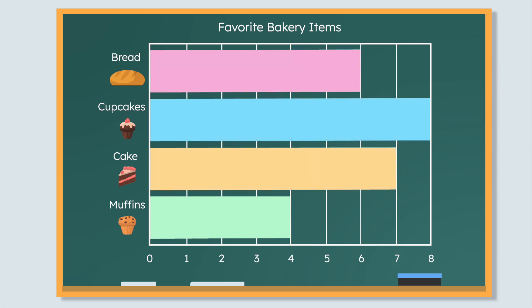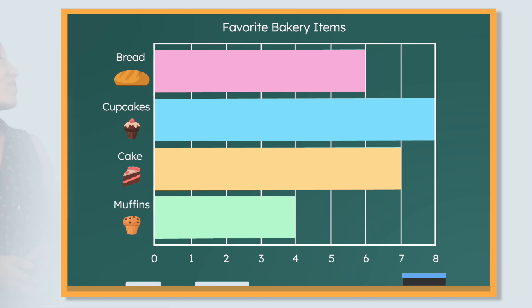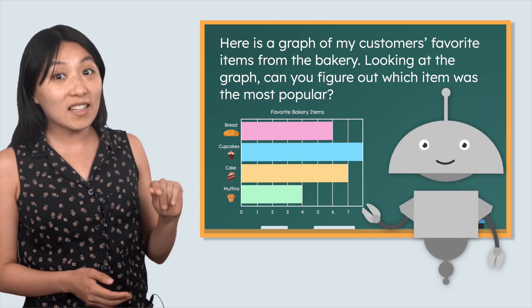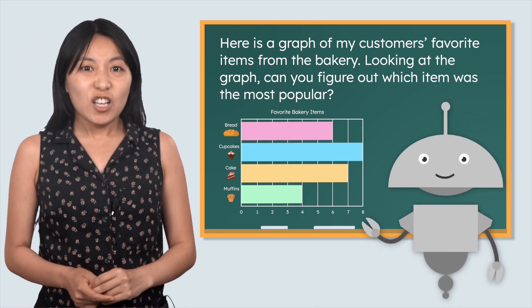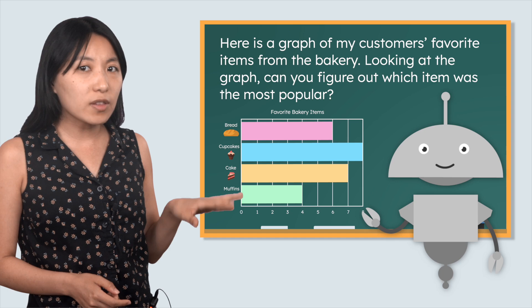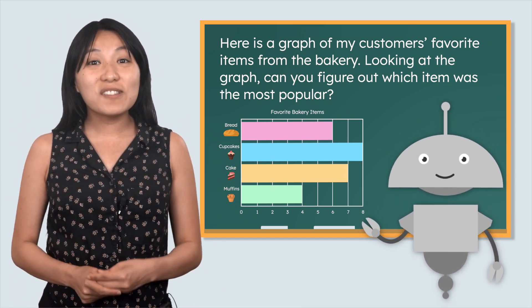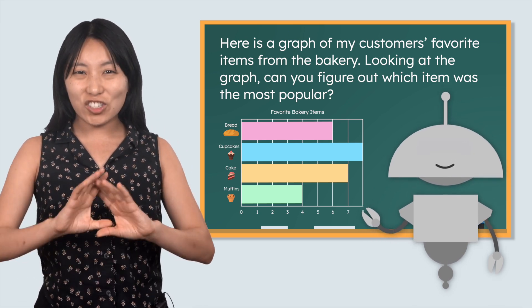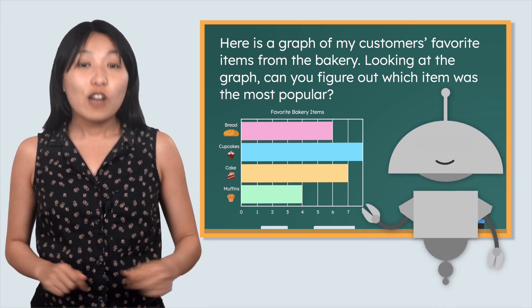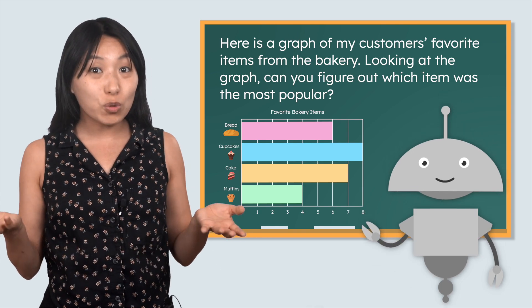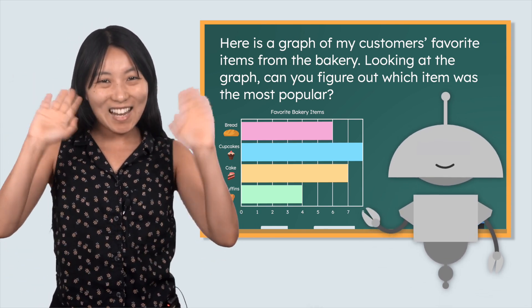Which item got the most votes? Cupcakes with 8 votes! Did you notice that the bar for cupcakes is the longest? That's another way we can tell it got the most votes! Mia, it looks like cupcakes are your most popular item. You should definitely keep those on the menu since people love them so much. We did it, everyone! We used our knowledge of graphs and data to solve the mystery. Awesome work! Remember, we have all the tools we need to solve any problem. See you next time!